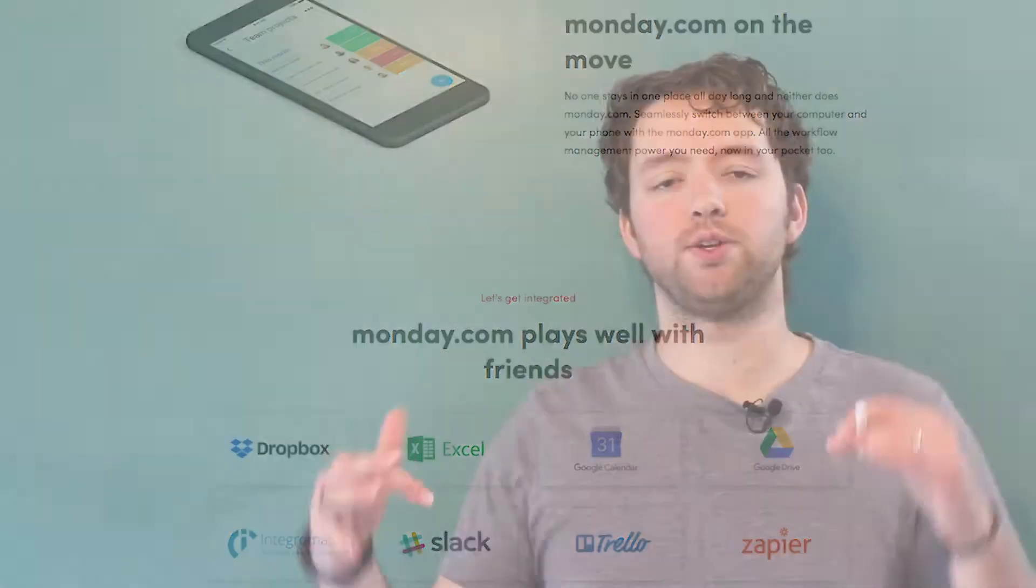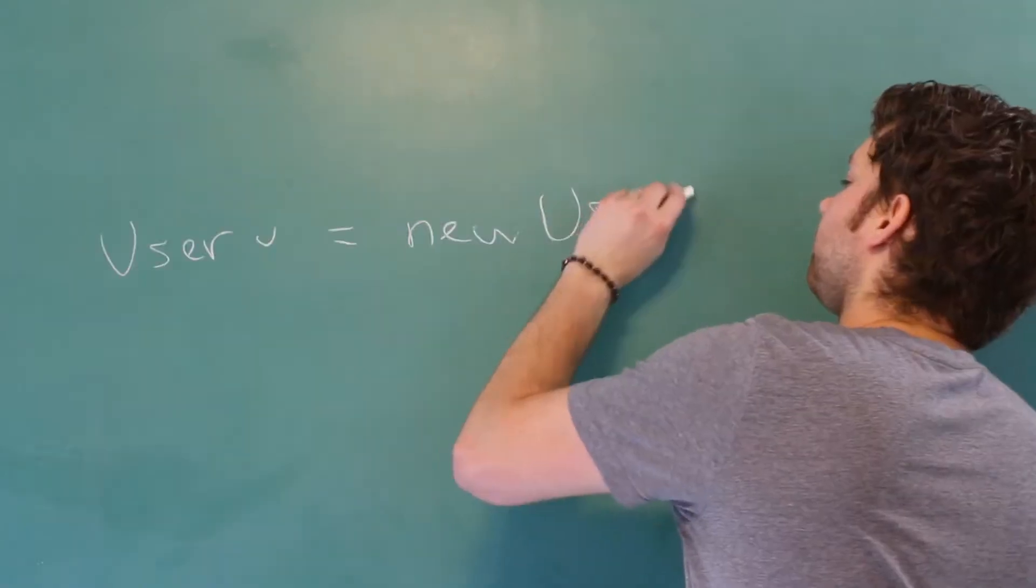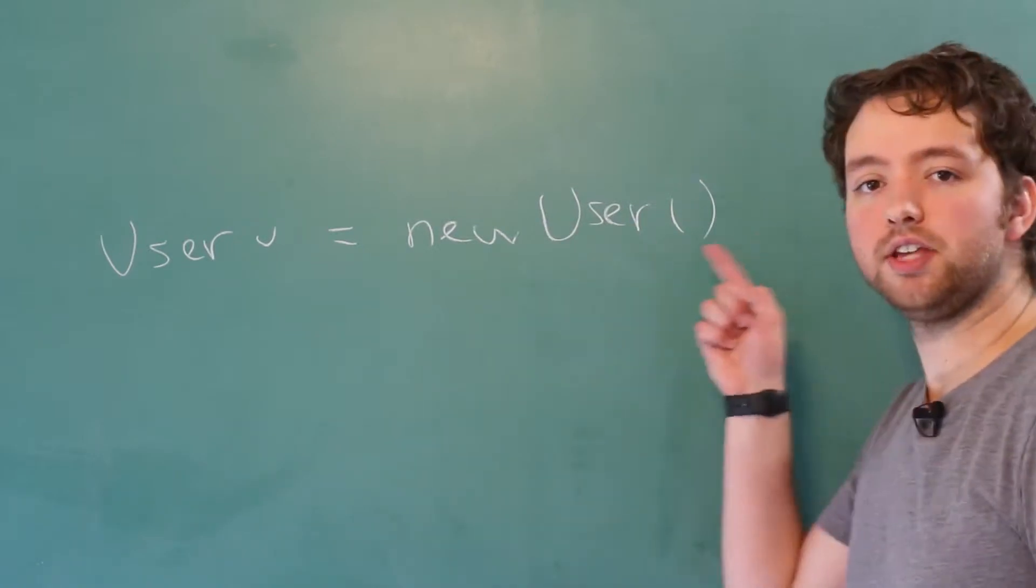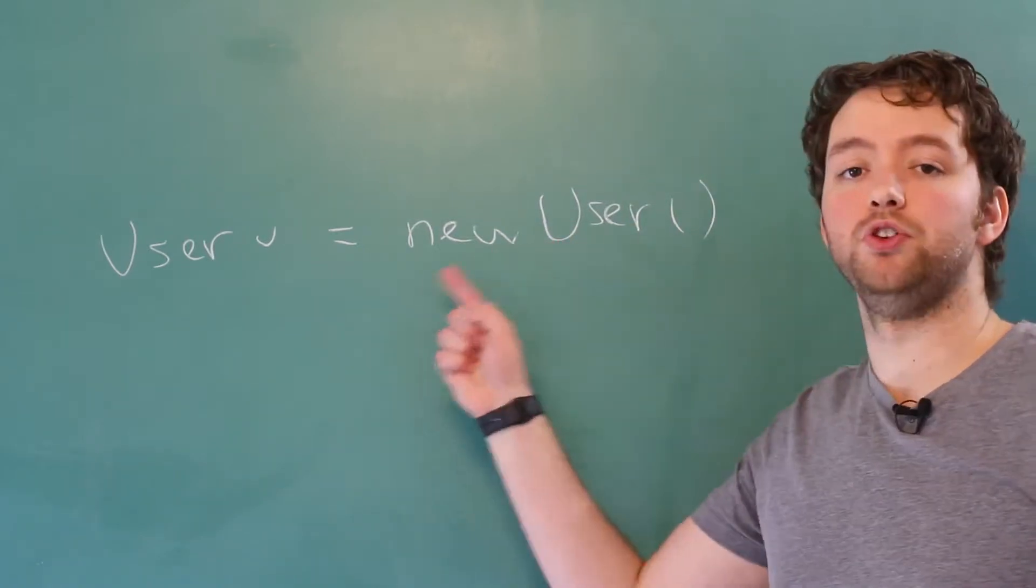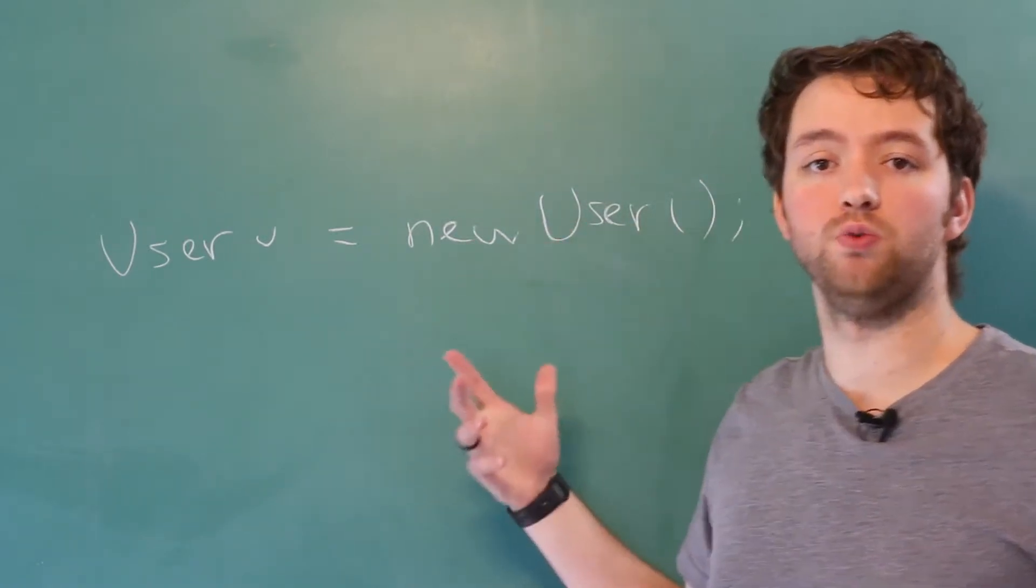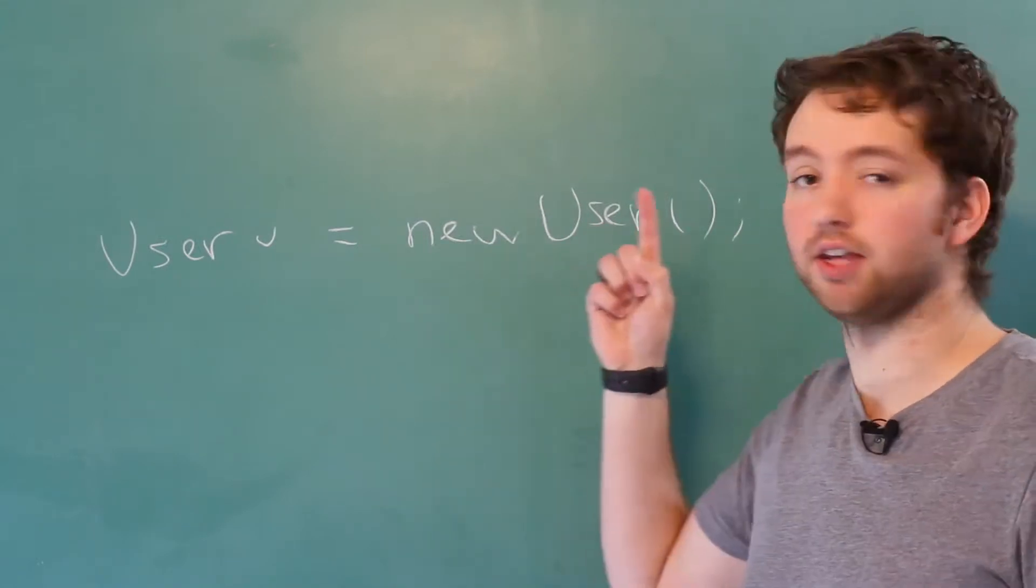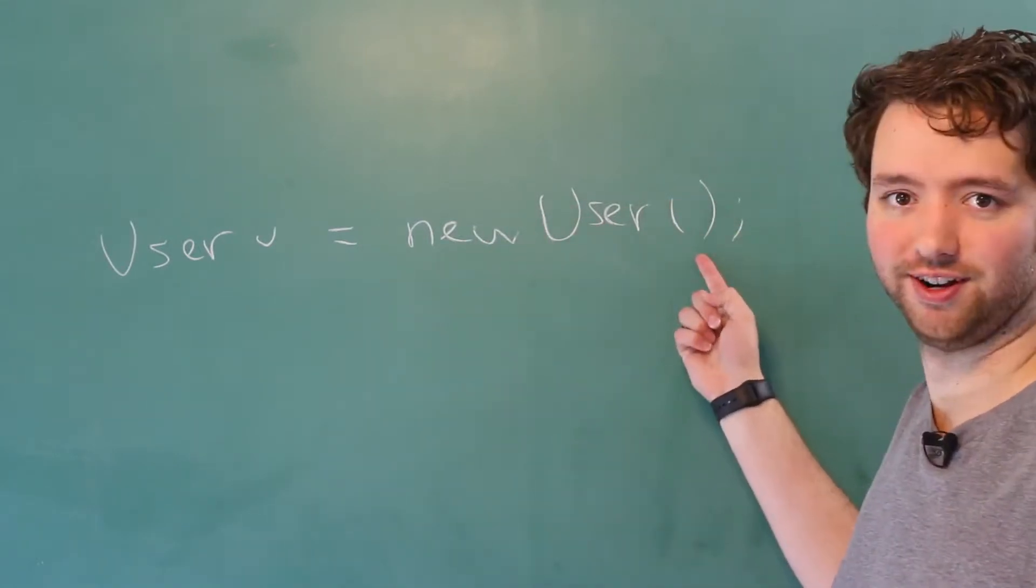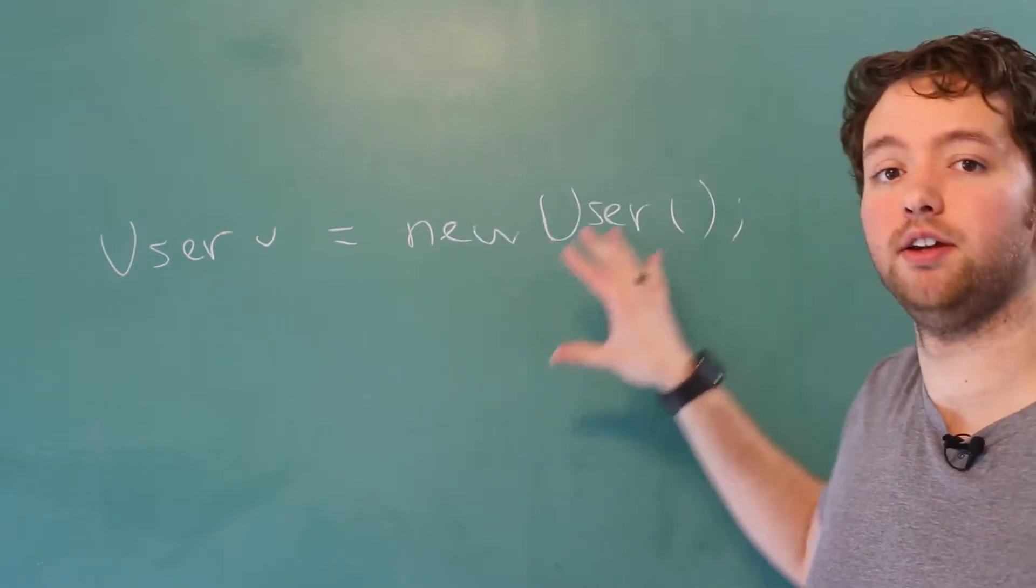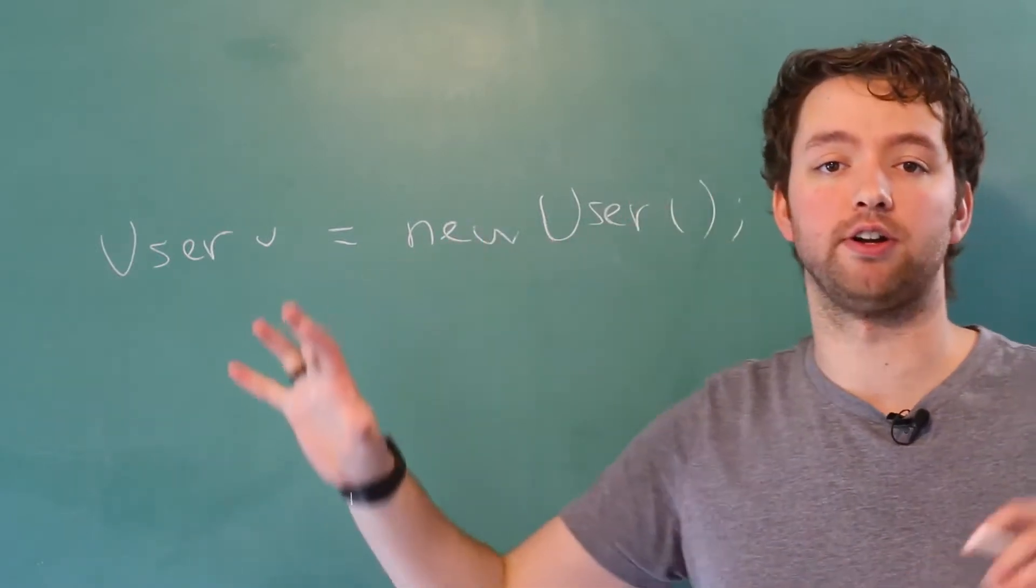So the whole idea behind a constructor is it's a special method that is invoked when we instantiate a class. So you've probably seen it such as here, User. This is a method and it's prefixed with the new keyword. That is the key thing to know with constructors: we call them by saying new constructor, whatever the constructor name is. Now this constructor name needs to match the class name.